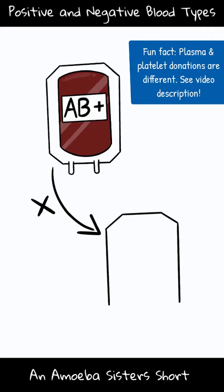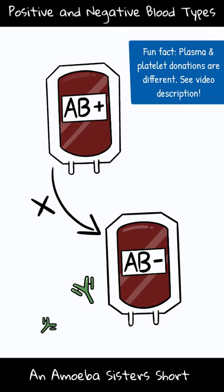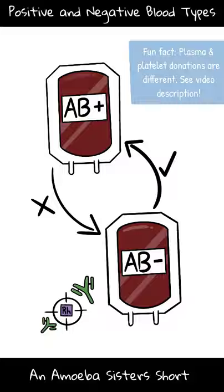So an individual who is AB positive cannot give a red blood cell donation to someone who is AB negative. This is because the individual who is AB negative can develop antibodies, proteins that are part of the immune system, against that RH factor. However, that AB negative individual can donate to an AB positive or AB negative individual.